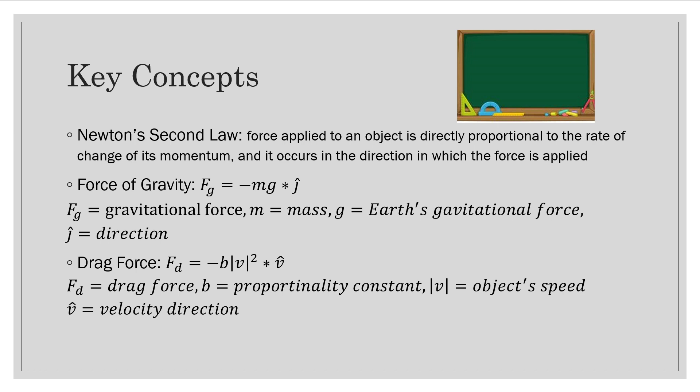Drag force will be pushing up in the opposite direction of the gravitational force. It is a significant factor that opposes the object's motion as it falls through a liquid, typically air. When an object falls through a fluid, two main forces act on it, gravitational force and drag force. The formula for the drag force is negative proportionality constant times the absolute value of the object's speed squared times the velocity direction. With these two accounted for, we can add them together and we will get our net force.